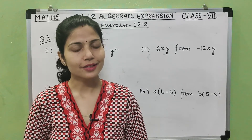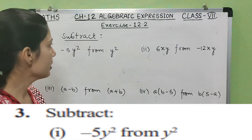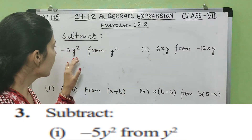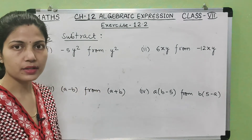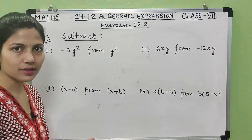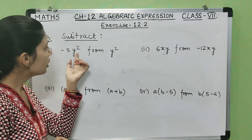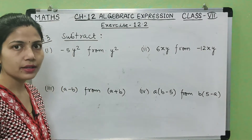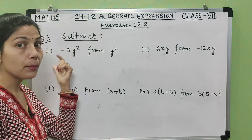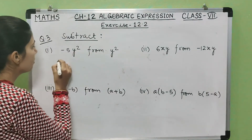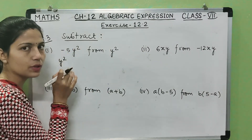So let's start. Question number three is 'subtract,' and the first part is: subtract minus 5y² from y². So in this question we have subtraction — what to subtract is given as minus 5y², and we have to subtract it from y². So y² comes first.